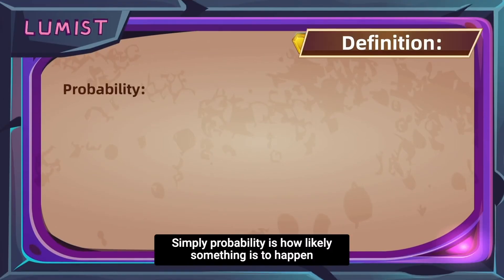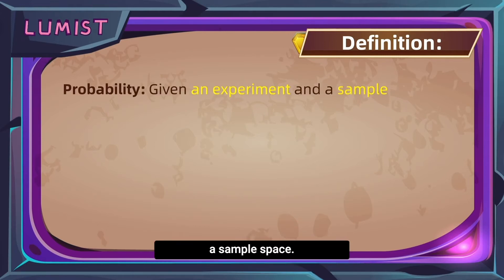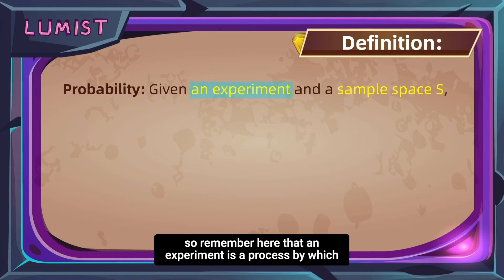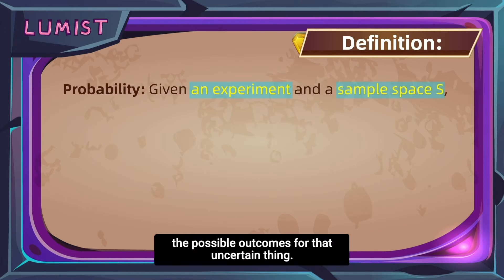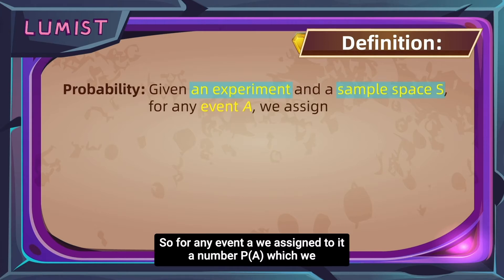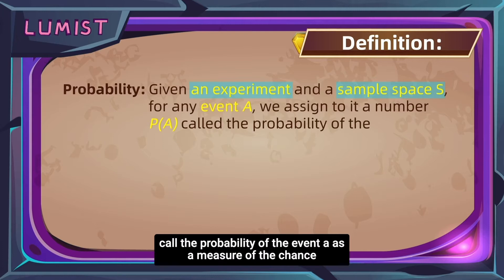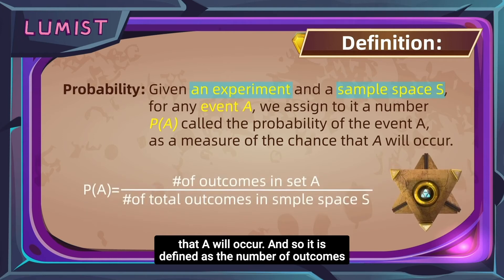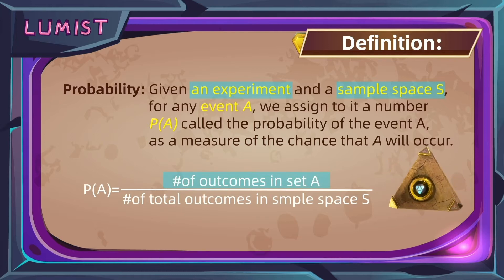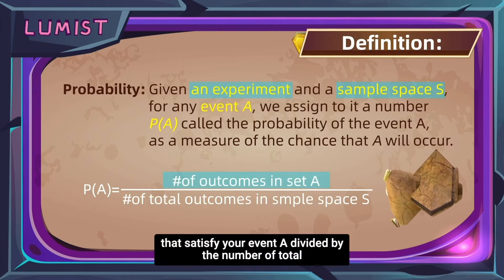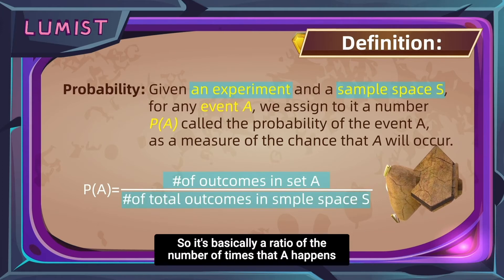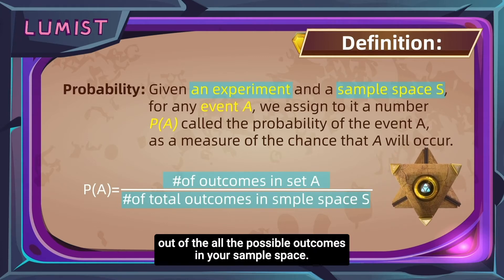Simply put, probability is how likely something is to happen. Formally, it is defined as follows. Given an experiment and the sample space F — an experiment is a process by which we observe something uncertain, and the sample space is all the possible outcomes for that uncertain thing — for any event A, we assign to it a number P(A), which we call the probability of event A, defined as the number of outcomes that satisfy event A divided by the total number of outcomes in the sample space.